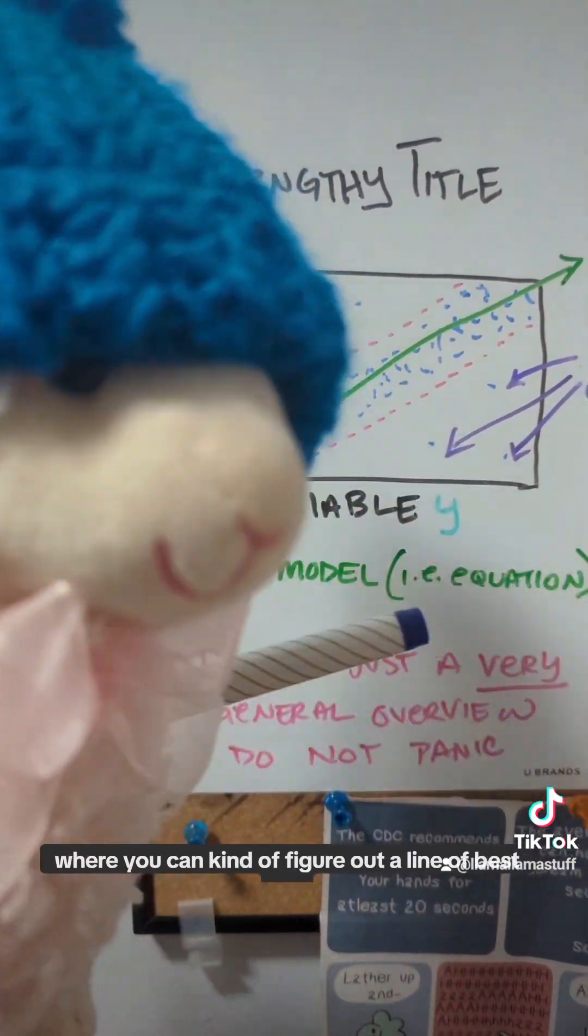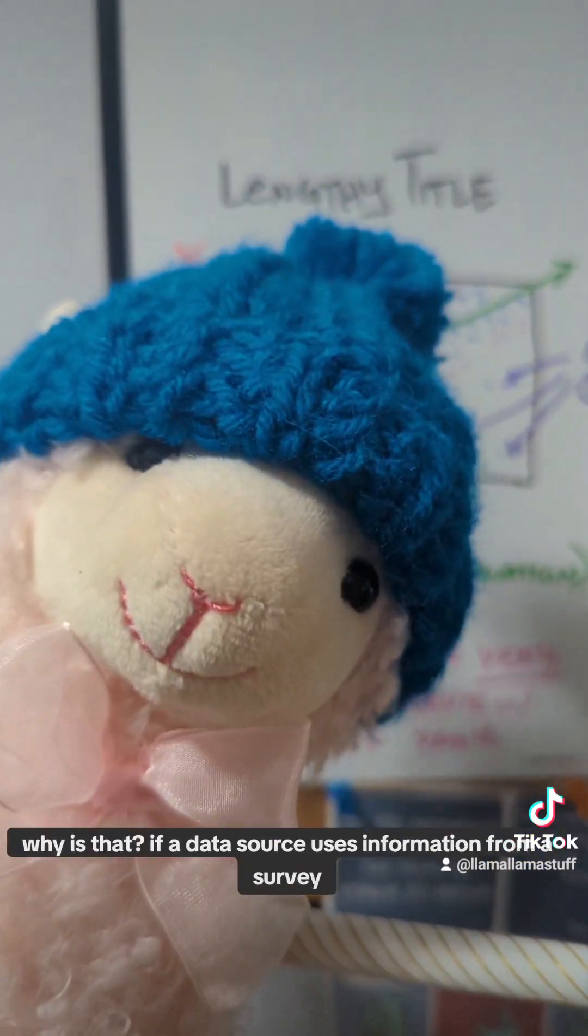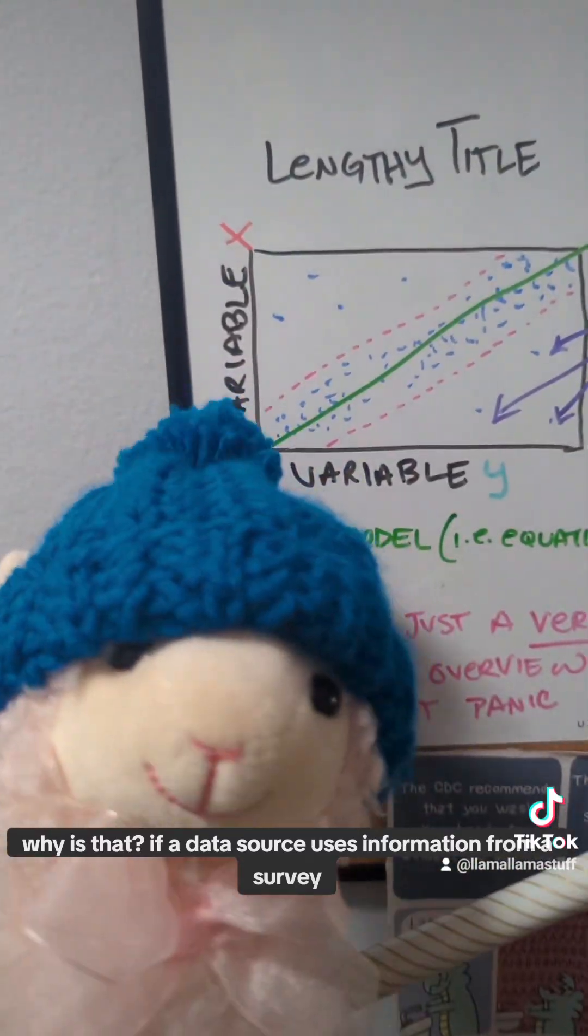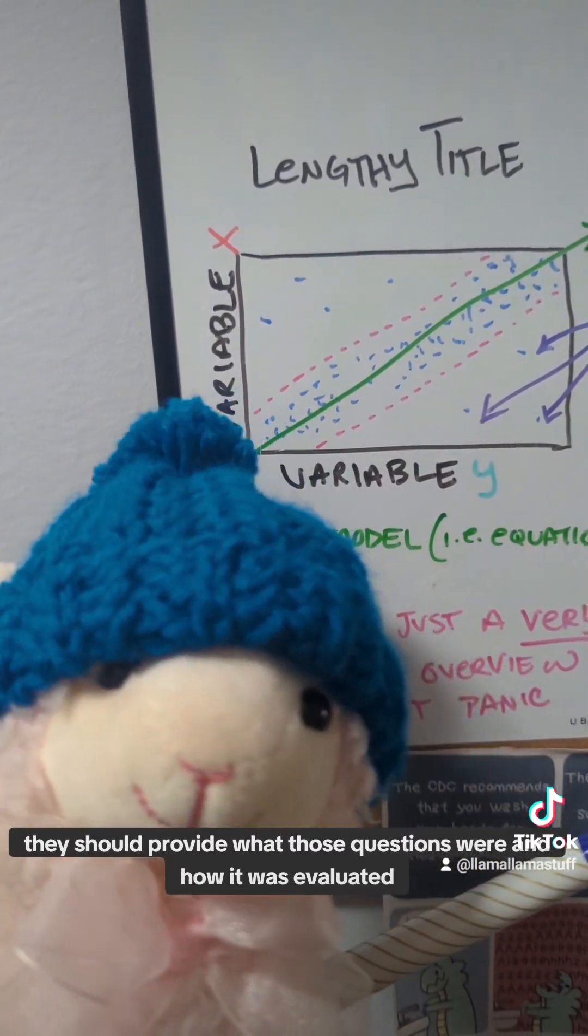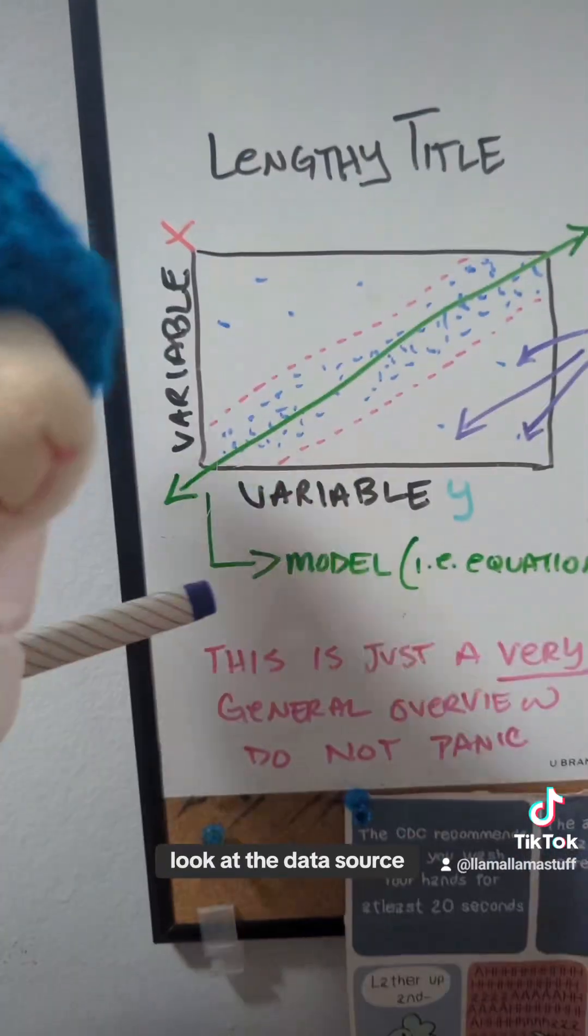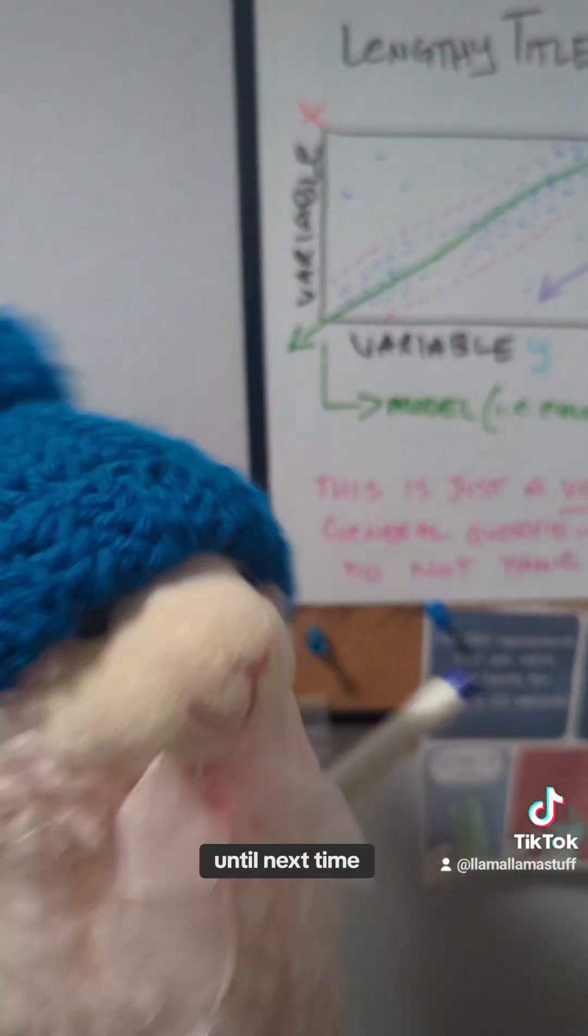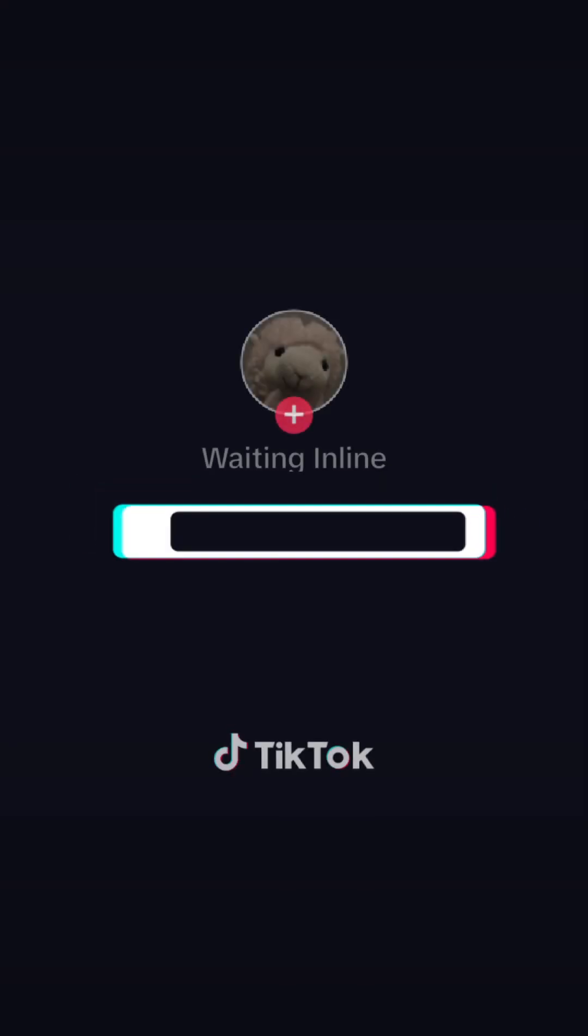That's why it's important to look at the data source when you get an article because you want to see things like how big is the data set. Because in this example, this is a pretty decent sized data set where you can kind of figure out a line of best fit. But if your data set only has like 20 points, why is that? If a data source uses information from a survey, they should provide what those questions were and how it was evaluated.